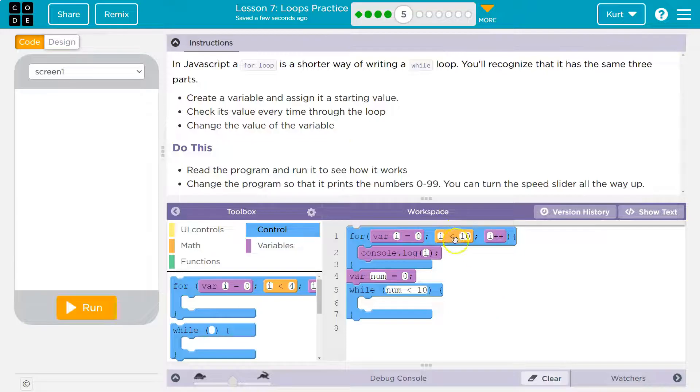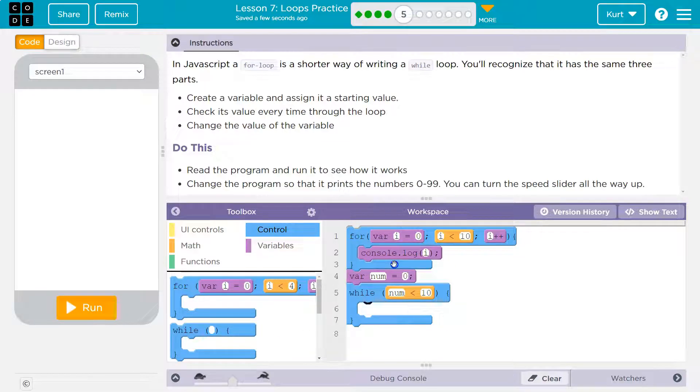The way I'm picking that is I'm just looking at this. Since they're doing I, I'll do num less than 10. Then it says change the value of the variable. If I wanted to do what they are, they're doing I++. You can do the same thing here.